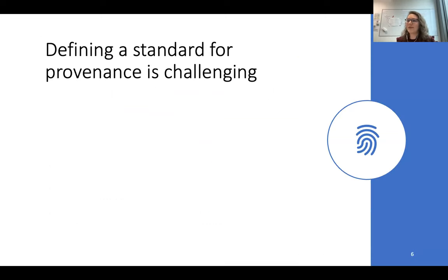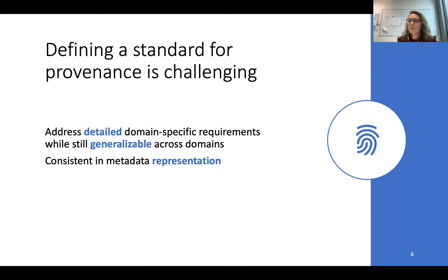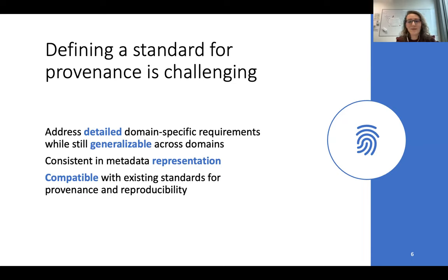If we want to answer this question, we need to define a standard for provenance, and this is not straightforward for a number of reasons. Firstly, this standard should be detailed enough to address highly domain-specific requirements for provenance, but also generalizable across domains — otherwise it's not a common standard. Secondly, even if we have this set of metadata defined, there also needs to be agreement about how to represent it in a structured format. And we should not reinvent the wheel — ideally reusing existing standards that are already widely adopted and that specify how to best represent provenance and promote reproducibility.